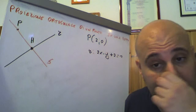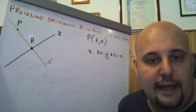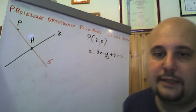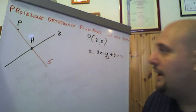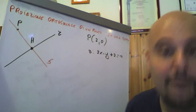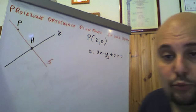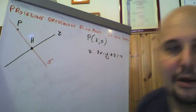Dovremmo intersecare le due rette, R e S, solo che non sappiamo S. Per calcolare S dovremmo andare a calcolare l'equazione di una retta che passa per quel punto, in questo caso il punto P, ed è perpendicolare, ortogonale alla retta R.